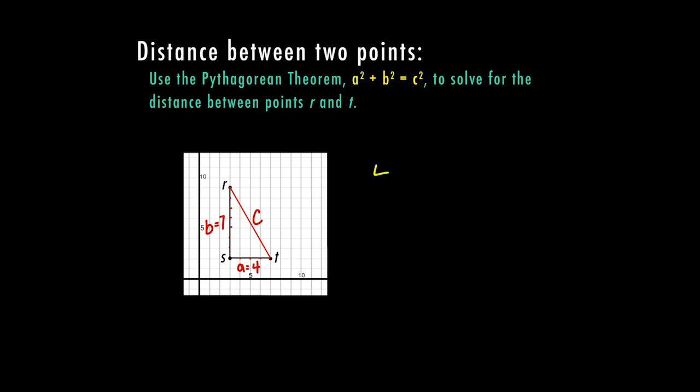So I'm going to plug this into my formula. I have 4² + 7² = c². 4² is 16, 7² is 49, and c² is what I'm solving for. So when I add 16 and 49, I get 65 and that equals c². So here I have to do the opposite of squaring, which is the square root. And so this cancels, c equals.